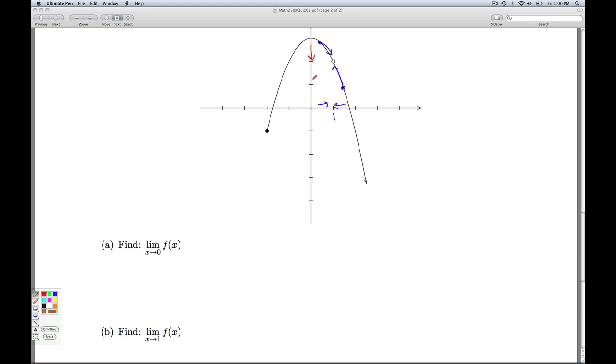And I'm heading in this way, the y values are heading up that way. So from both directions, these y values seem to be getting closer and closer to 2. And so we'll say that limit is 2. Now notice there's a hole in the graph at x equals 1, and that's okay. The limit doesn't care what's actually happening at 1. It just cares what's happening near 1.